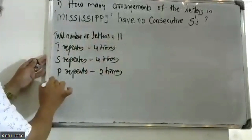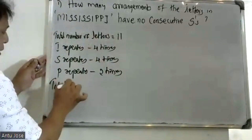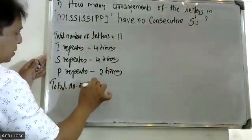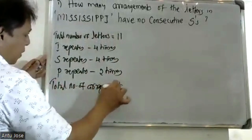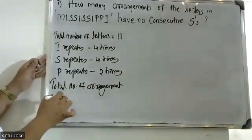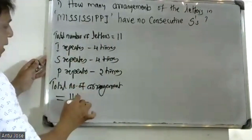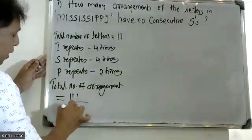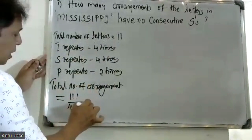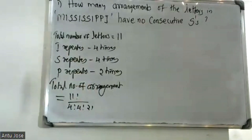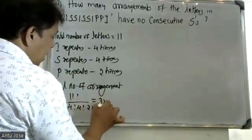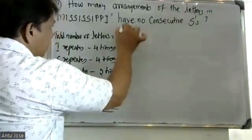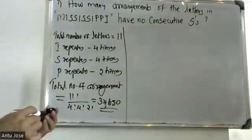The total number of arrangements is equal to 11 factorial divided by 4 factorial, 4 factorial, and 2 factorial. The answer is 34,650.